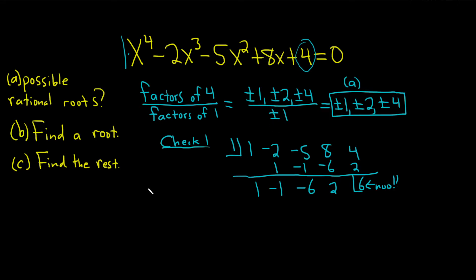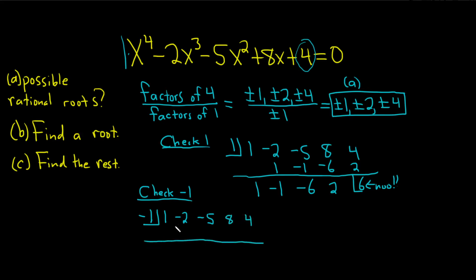Let's try negative 1. So negative 1, and then we write the same coefficients: 1, negative 2, negative 5, 8, 4. Bring down the 1. 1 times negative 1 is negative 1. Add and get negative 3. Negative 3 times negative 1 is 3. Add and get negative 2. Negative 2 times negative 1 is 2. Add and get 10. 10 times negative 1 is negative 10. Add and get negative 6. Not good — we want 0.